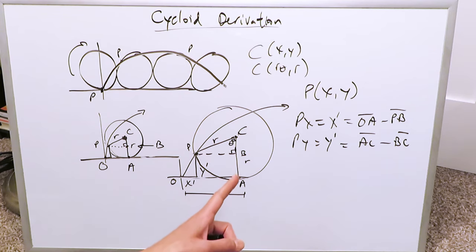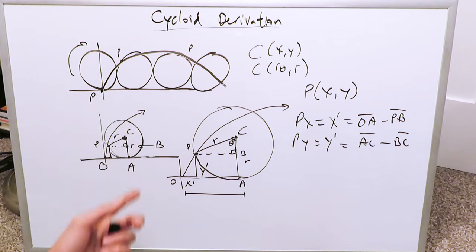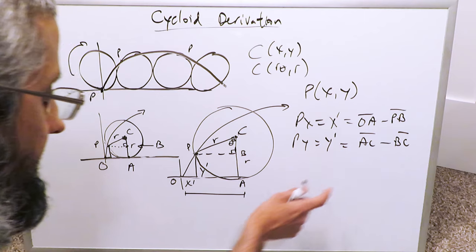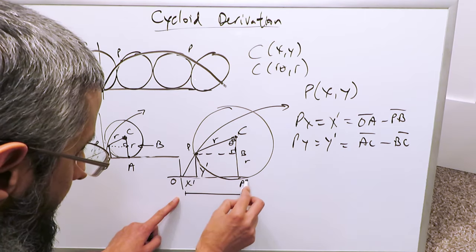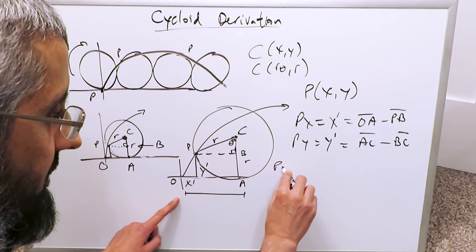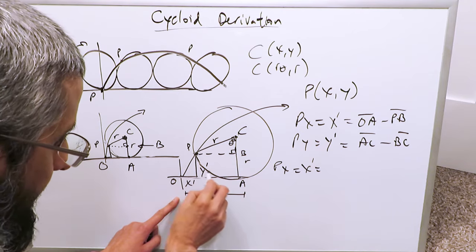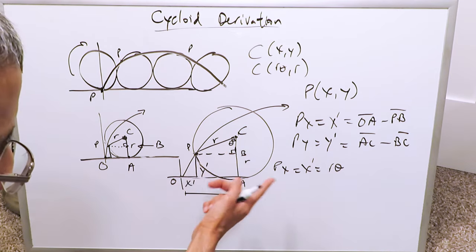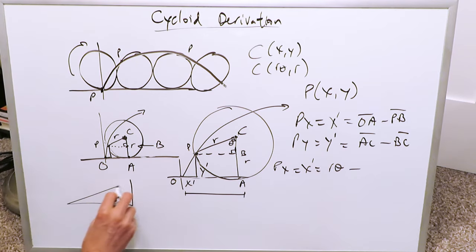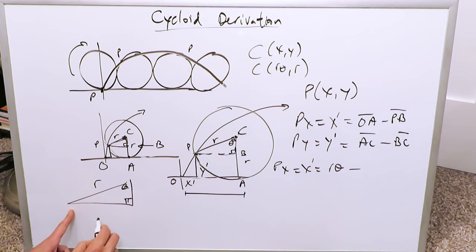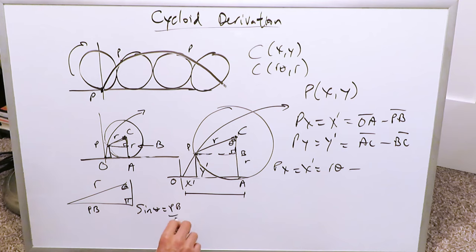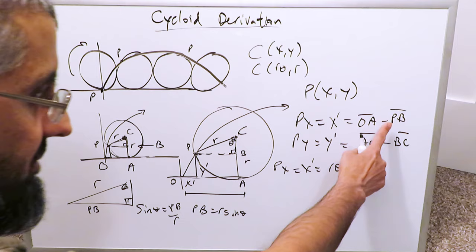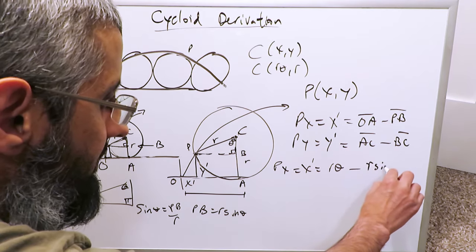We have everything to determine our parametric equations PX and PY. OA equals the arc length r·theta. So PX equals X prime equals OA minus PB, which is r·theta minus PB. To find PB, take the small triangle and blow it out: sine of theta equals the opposite side PB over r. Therefore PB equals r·sine(theta). So PX equals r·theta minus r·sine(theta).